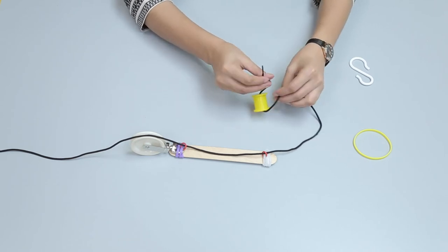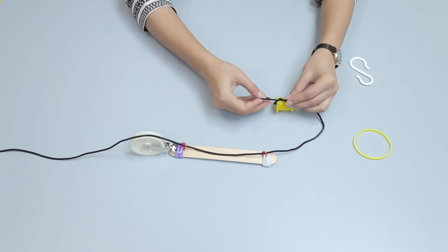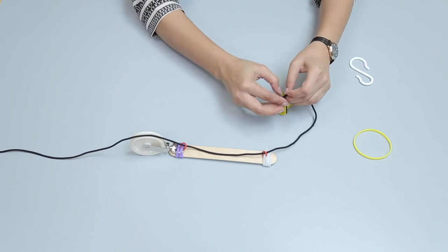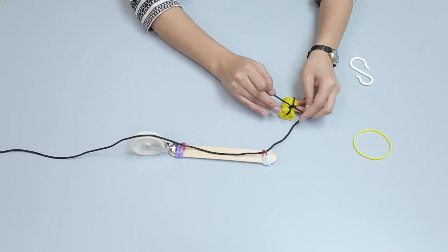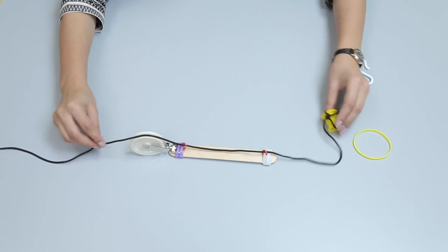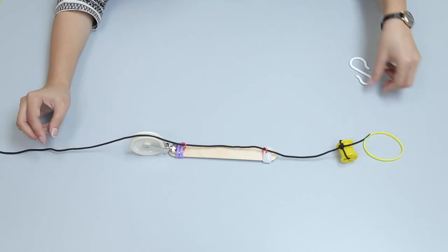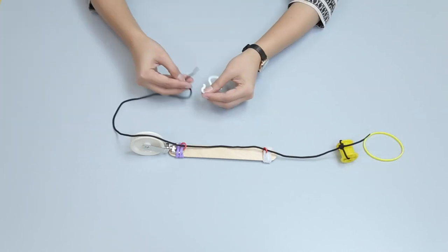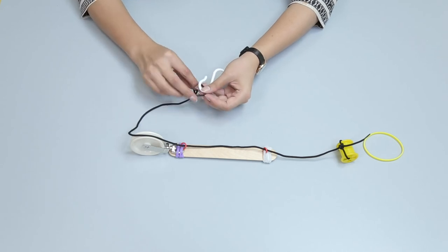Carefully tie the cotton reel at one end and the s-hook at the other end to hold the load.